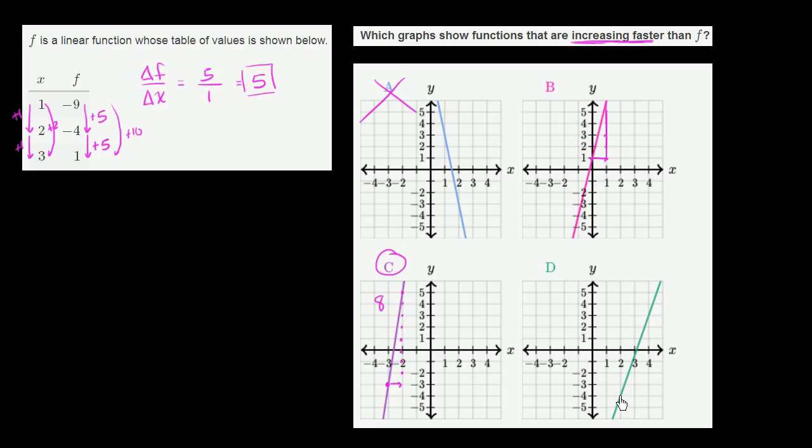Now let's look at this choice. If we start right over here, I just picked this point because that's at a nice integer coordinate. It is at the point 2 comma negative 4. If we increase x by 1, then we increase y by about 3 and a half. Definitely not 5.